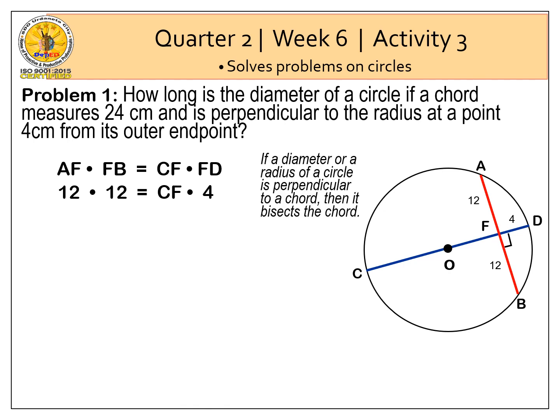So if a diameter or radius of a circle is perpendicular to a chord, then it bisects the chord. That's why AF and FB are both 12 cm. We simplify. 144 is equal to 4CF. Dividing both sides by 4.